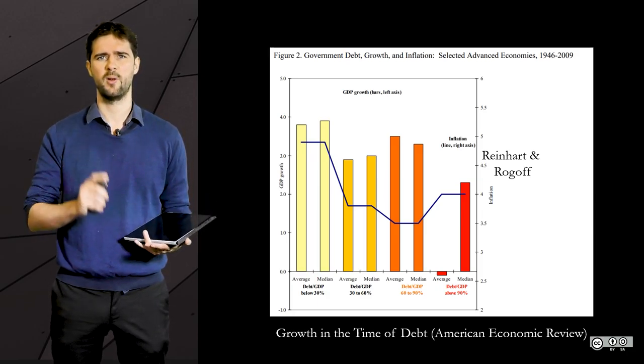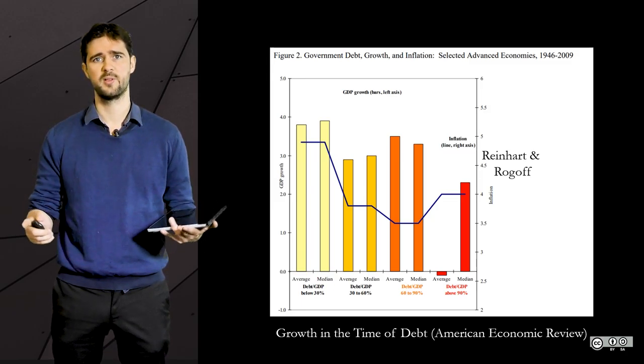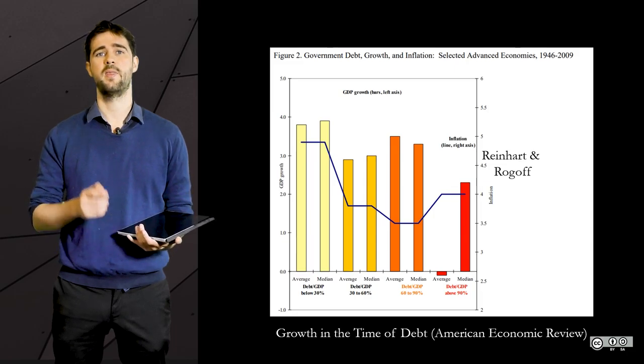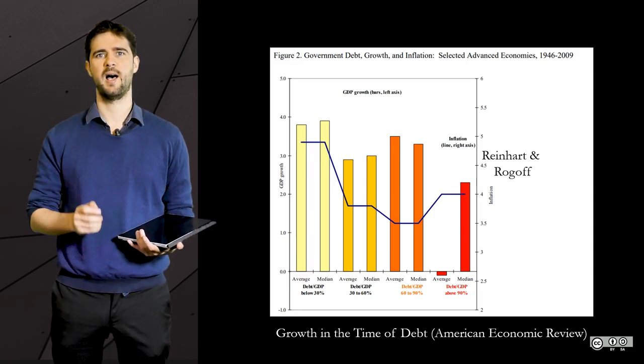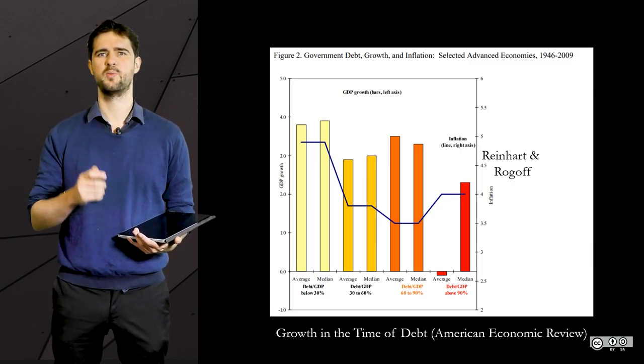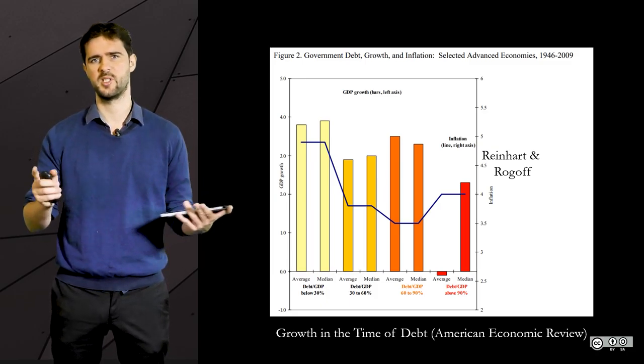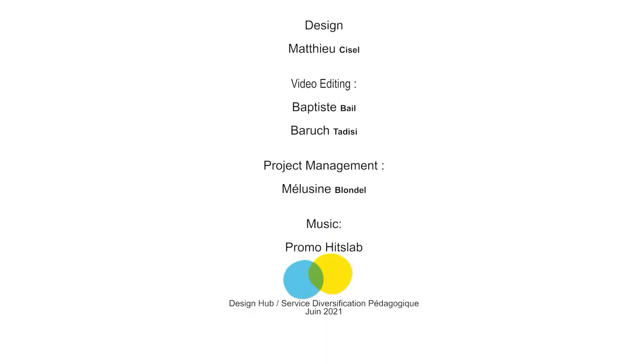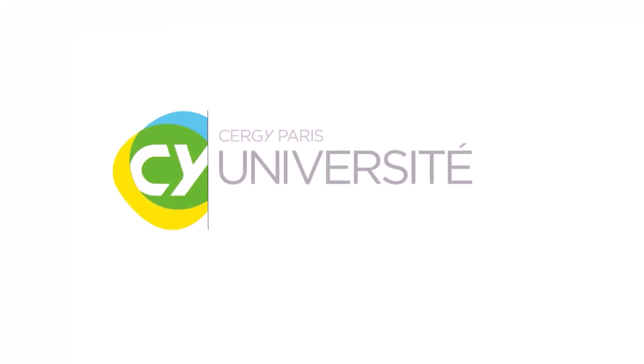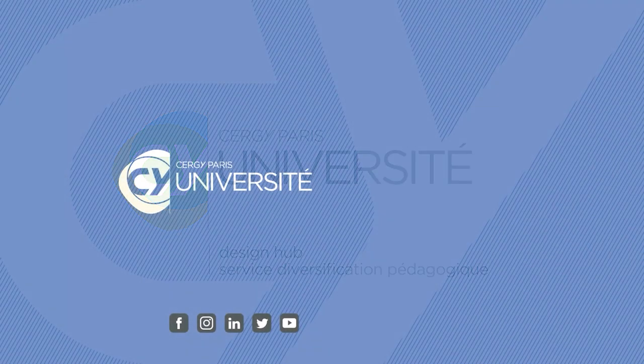More often than not, a graph alone does not represent a sufficient proof to pinpoint differences and contrast, and they often ought to be backed up by a statistical test. This is the main takeaway of this video. If someone just presents the graphs when he should add a statistical test, you can just dismiss it. Thank you very much.